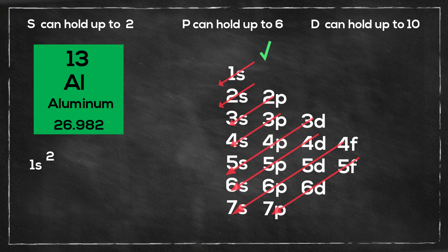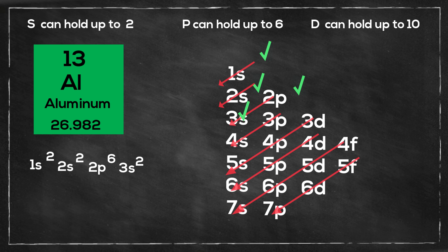Then I move to the 2s, so it can hold 2s2. Then the 2p, and the p can hold up to 6, so it will be 2p6. Then move to the 3s, so that will be 3s2. And now I have one electron left, and that will be 3p1. And if you write it using the noble gas, here's what it looks like.